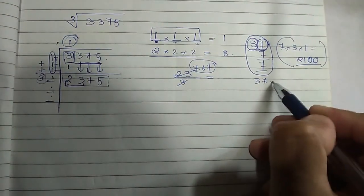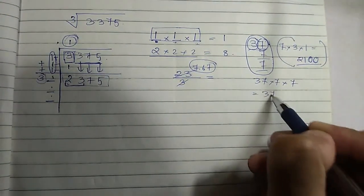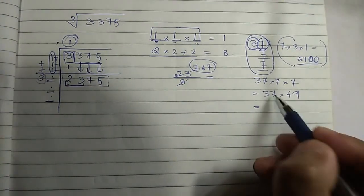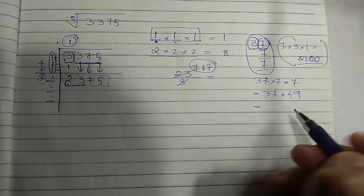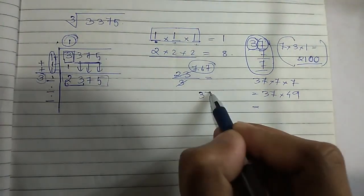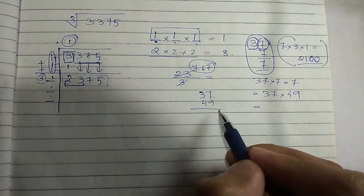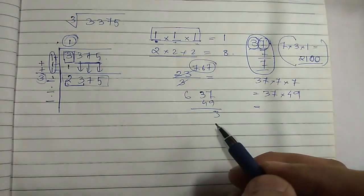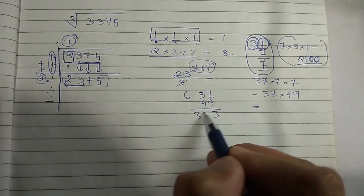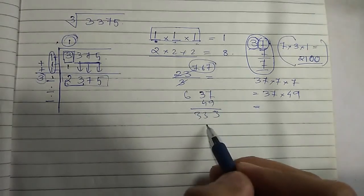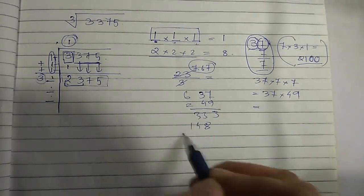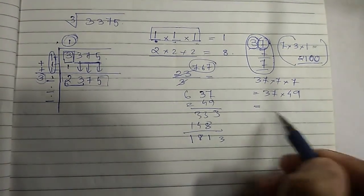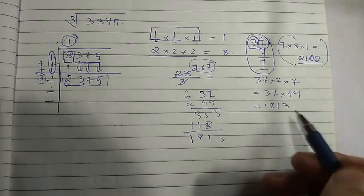The second step is: 37×7×7 = 37×49 = 1813. Adding the two steps: 2100 + 1813 = 3913. Since 3913 is more than 2375, we cannot use the digit 7.